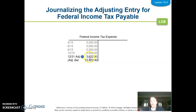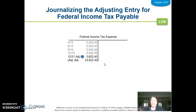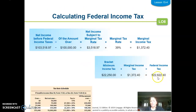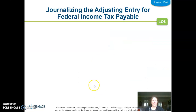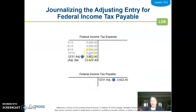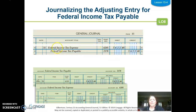There's a correction on the slide — the total should actually be $23,622.40. Since I'm at $20,000 already and need to get to $23,622.40, my adjustment to expense is $3,622.40. That's how much I still owe and would send with my tax return. So I'm going to debit federal income tax expense — which has a normal debit balance — and credit federal income tax payable because I still owe $3,622.40.